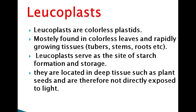Now we will discuss leucoplast. Leucoplasts are colorless plastids mostly found in colorless leaves and rapidly growing tissue like tuber stems and roots. These include roots, tuber stems, and colorless leaves.